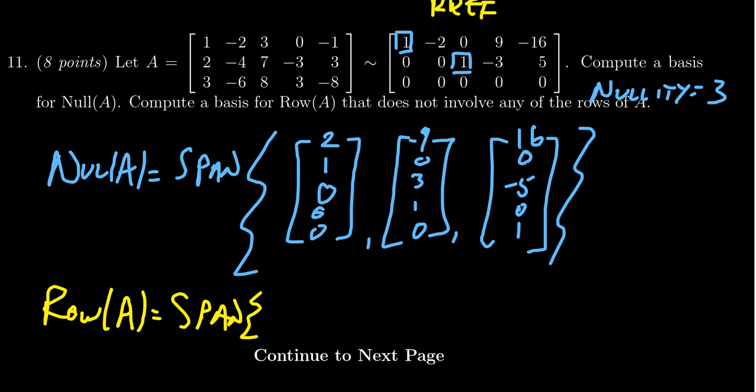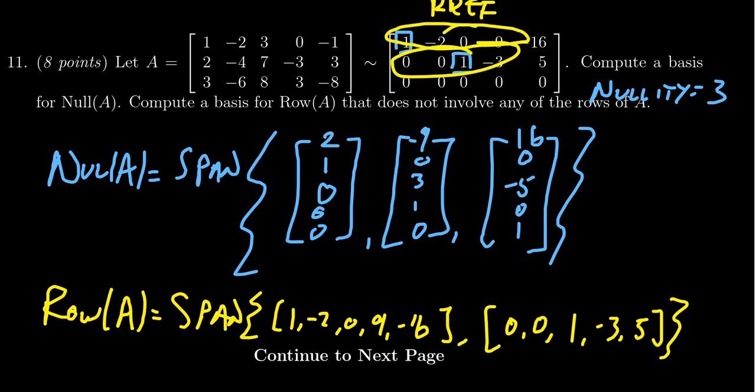So I'm just going to record these vectors right here. We're going to get the vector one, negative two, zero, nine, and negative 16. I'm going to deliberately write them as if they were rows because, you know, it is the row space. It makes sense to write them as rows. And then the second pivot we're going to get zero, zero, one, negative three, and five. So to find a basis for the row space you just grab the pivot rows of the RREF.